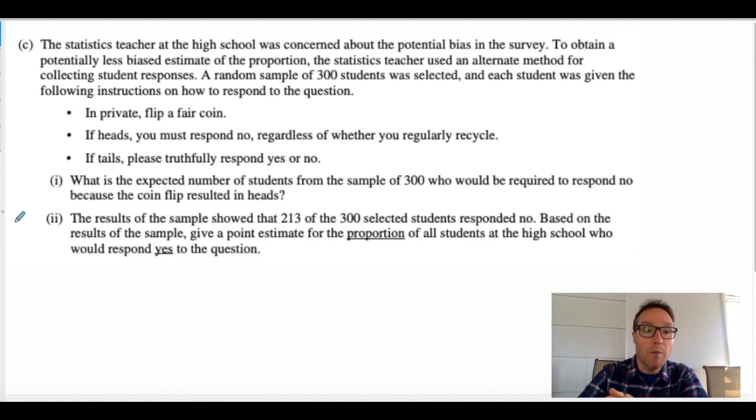Part double I here shows that 213 of the 300 responded no based on the results of the sample. Give a point estimate for the proportion of all students at the high school who would respond yes to the question. Okay, so 213, I'm going to subtract off the 150 that we expect to roll heads and be forced to say no. So 63 out of the 150 say no truthfully, or we expect. This is our prediction, that's why I'm putting a little hat on top of that P. We don't actually know the truth.